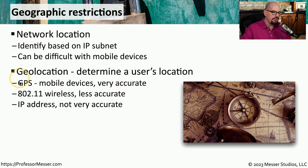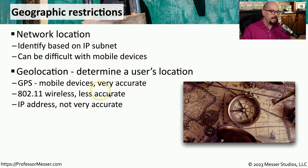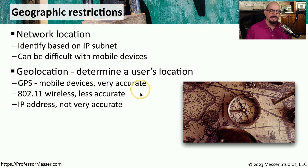Geolocation can work with GPS, especially on mobile devices, to get a very accurate description of where a person might be. You might also use 802.11 wireless. There are wireless databases that know all of the SSIDs of wireless devices in your area, and if that's cross-tabulated against the list of SSIDs that your mobile device can see, we can get a relatively accurate representation of where you may be located.